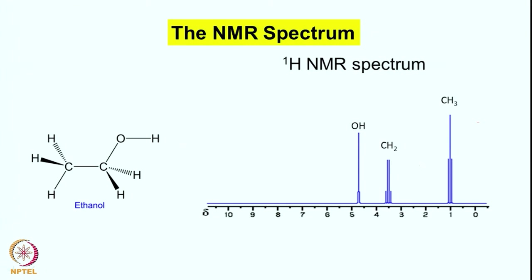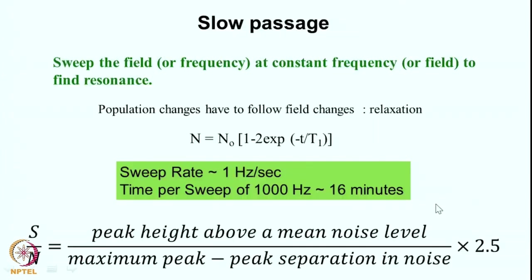So this is keeping the field constant and sweeping the frequency. Alternatively, what you can also do is keep the frequency constant and sweep the field. So one by one you will reach the resonance condition for the individual lines. It was more convenient to sweep the field rather than the frequency in those days, because the magnets were electromagnets and you could simply change the current through the electromagnet to change the field.